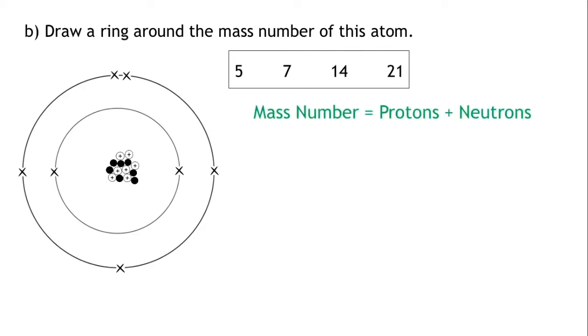The mass number is equal to the number of protons plus the number of neutrons. The protons and neutrons are found in the center of the atom in the nucleus.